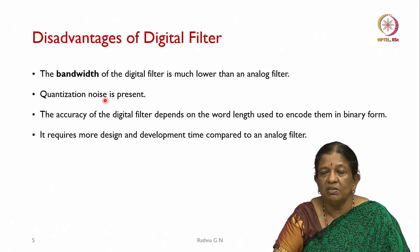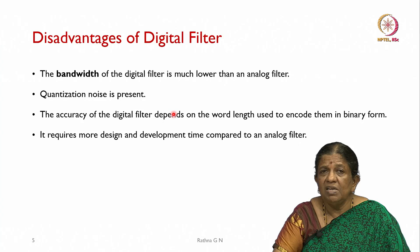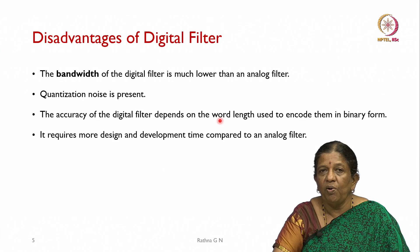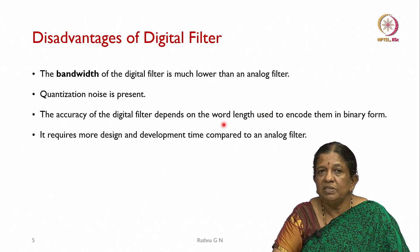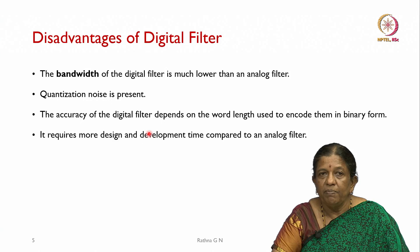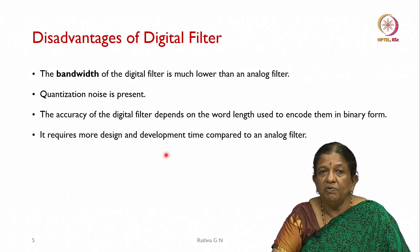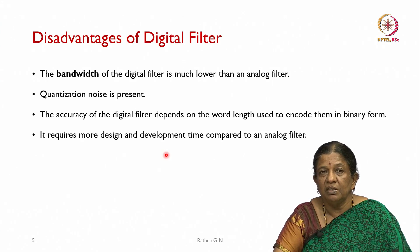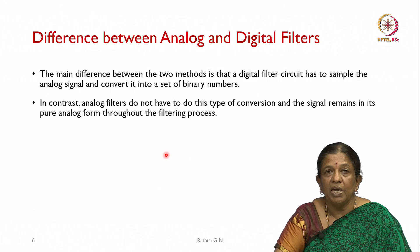Disadvantages of digital filters include a bandwidth much lower than analog filters and the presence of quantization noise. The accuracy depends on the word length used to encode values in binary — fixed point and floating point each have their pros and cons. Digital filters also require more design and development time compared to analog filters, including determining filter order and verifying with input signals.